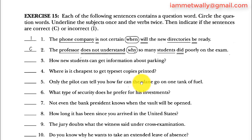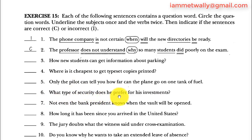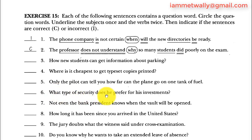Sentence 6: 'What type of security does he prefer for his investments?' 'What type of security' — 'what' is the question word, 'does' is the helping auxiliary verb, 'he' is the subject, and 'prefer' is the main verb. This is a question and it is correct.